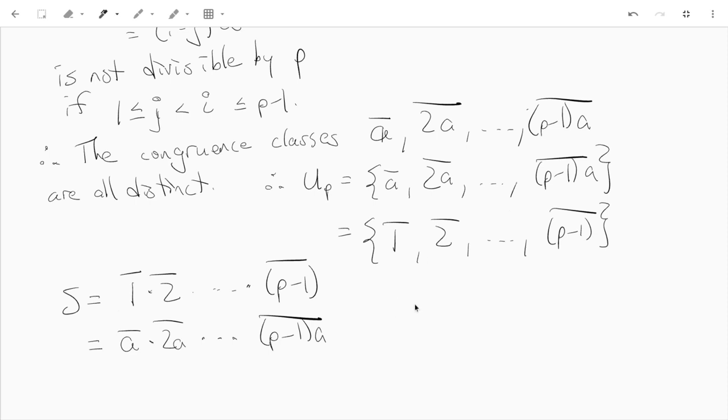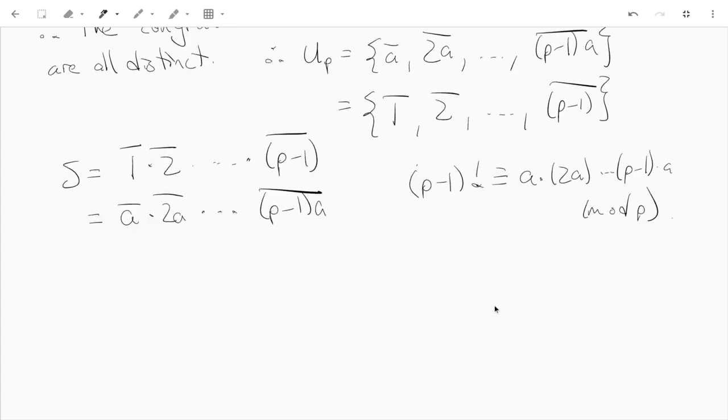In other words, we have that (p-1)! ≡ A·2A·...·(p-1)A mod p. And now notice that we have a lot of common terms on both sides. We have a 1 on both sides, a 2 on both sides, a 3 on both sides, all the way up to p-1. All those are co-prime to p, so we can cancel them all.